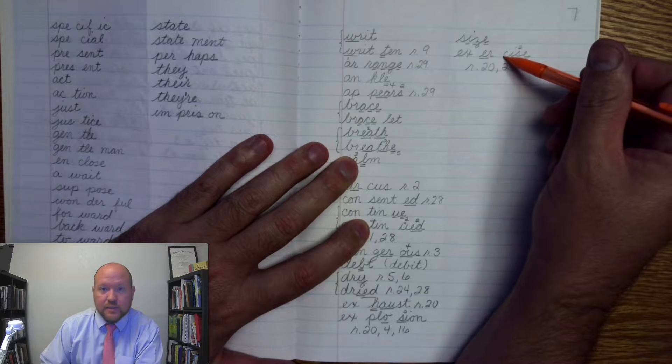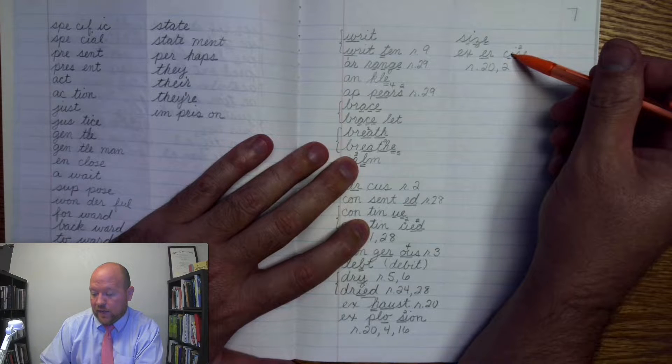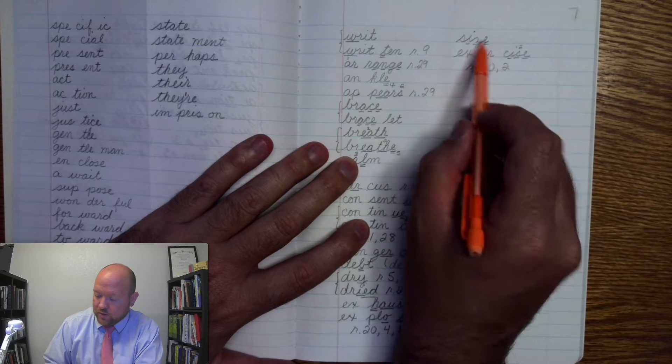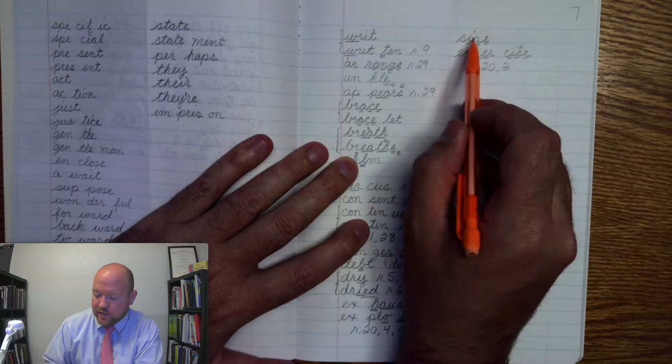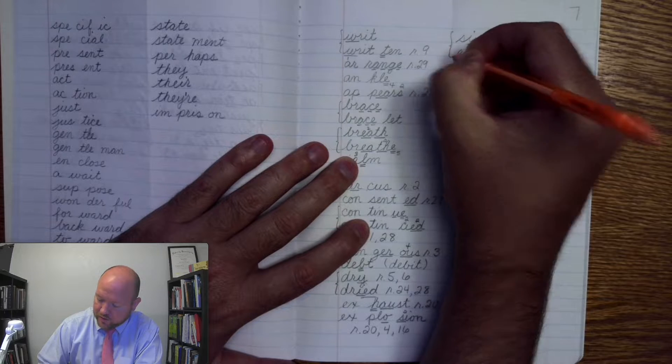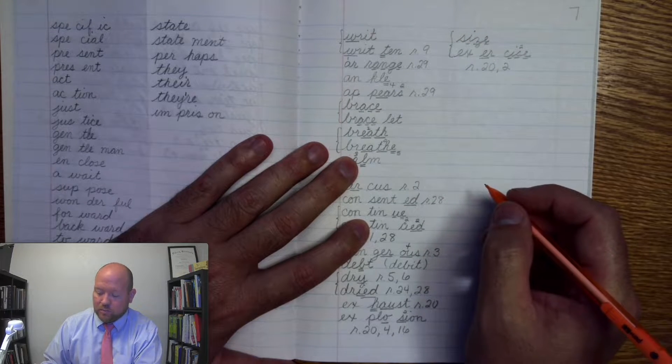And the C says S because it's followed by an I. And you can see that these are totally different. So don't get confused and think that exercise comes from the base word size. But we are going to brace those two because they help us understand how to spell each other.